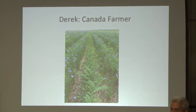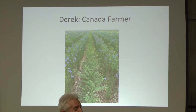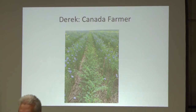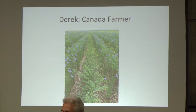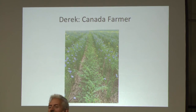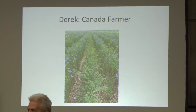Look at this Canadian farmer doing polycropping — two crops: chickpea and flax. The flax isolates the chickpeas and stops disease from spreading. The flax gets 10% additional fertility from the chickpea nitrogen fixation, with only an inch and a half of moisture and no fungicide.